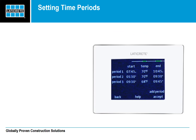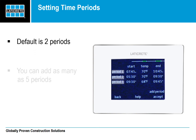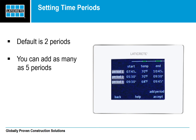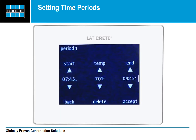The display shows the different periods for the floor heat to turn on and off throughout the day and night. The default setting is two periods, and you can add as many as five periods total at any time. To continue creating a custom period, start by selecting the period you wish to change. In the period you have chosen, you can edit the start time, temperature, and end time when the StrataHeat system will turn off.